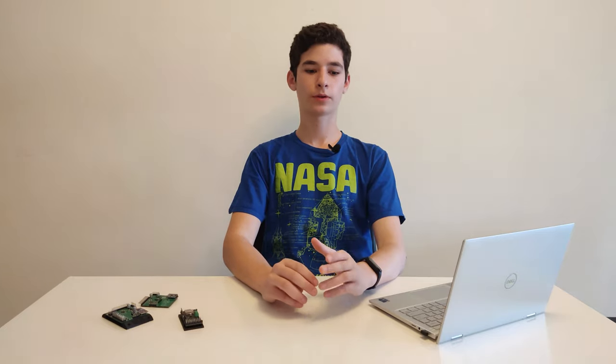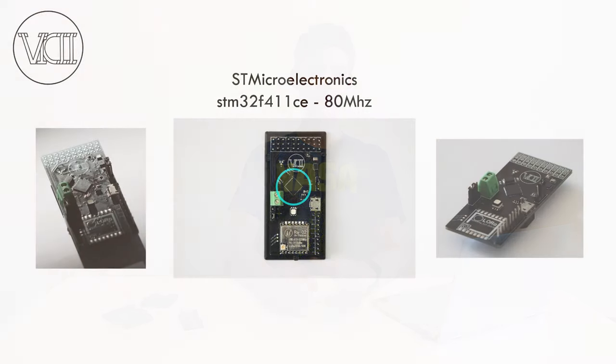Now we've talked about all of the sensors and calculations, but we haven't talked about what's making them. What's making them is a Cortex-M4 chip by STMicroelectronics. It runs at 80 MHz, or 80 million times per second, enabling high performance and a lot of calculations quickly and reliably.